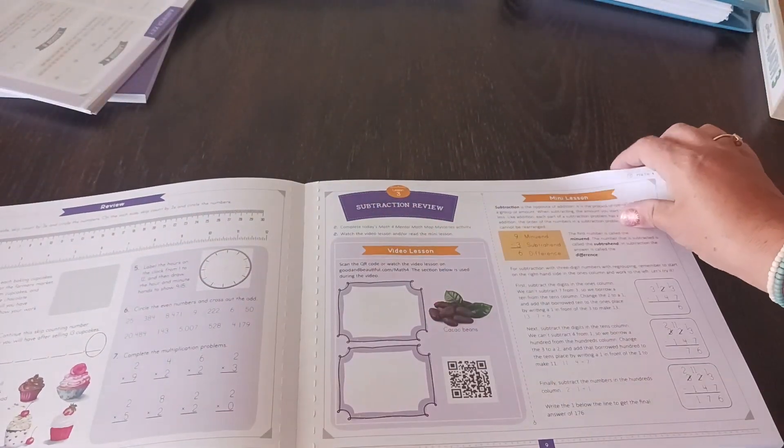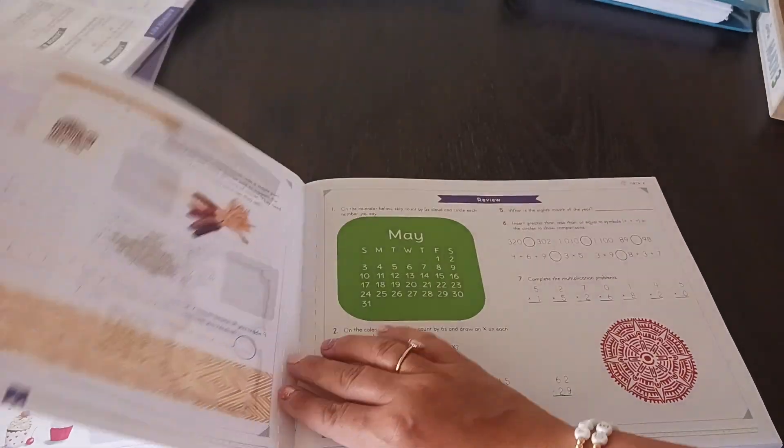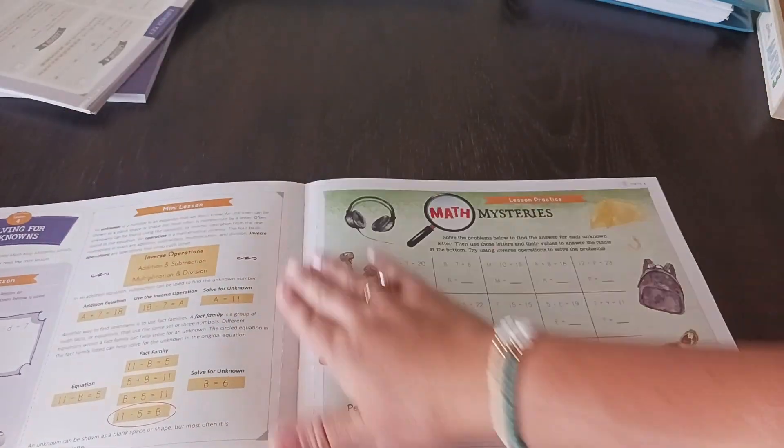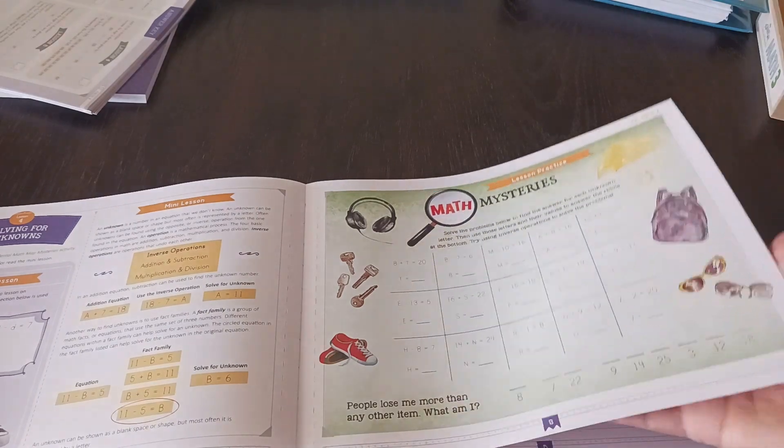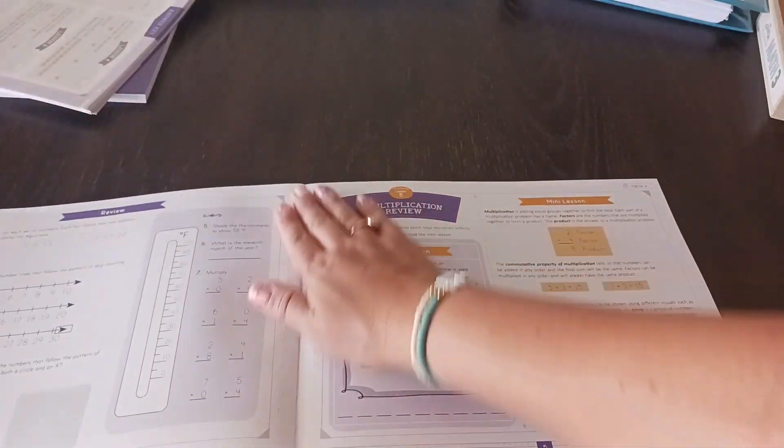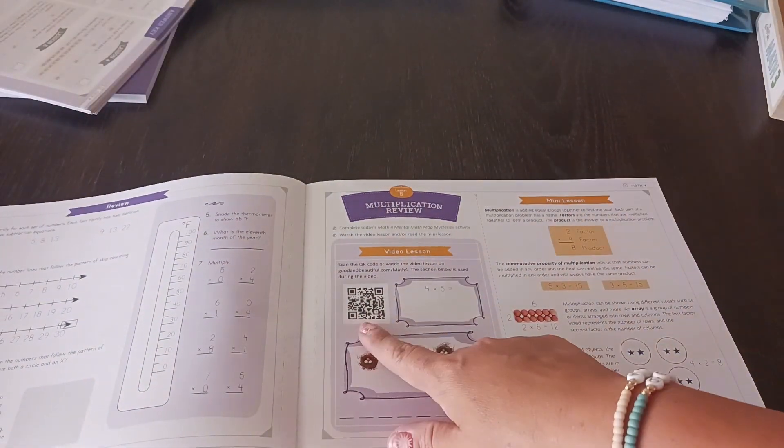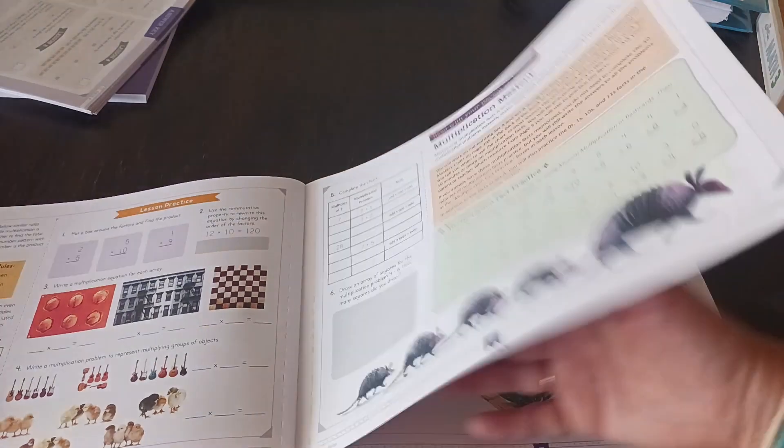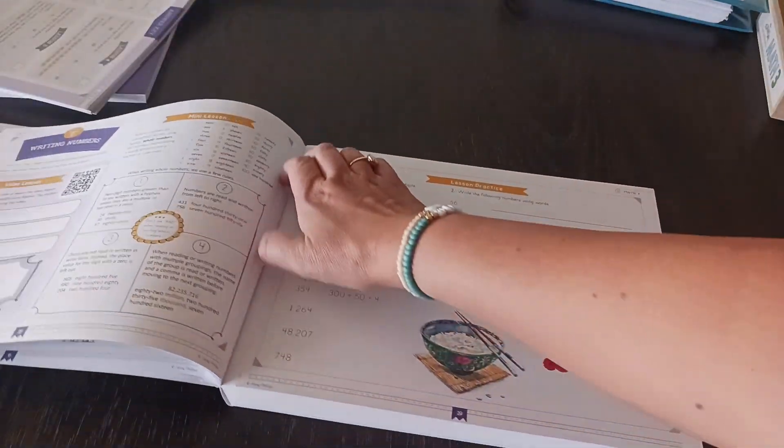I will say it does appear that the lessons are a little bit longer than grade three, but maybe by a little bit, it kind of varies. It looks like, but yeah, again with the QR codes. So yeah, it just, it's basically the same thing. It's just a grade level ahead. We just really love the layout of it.